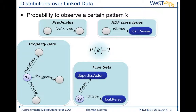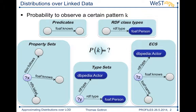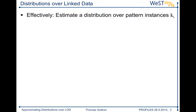The last pattern that I address in this paper — there are many more — is the so-called extended characteristic sets, or ECS for short. These ECS are a combination of properties and RDF class types and the combination in which they are used to model entities on the linked data cloud. When looking at these probabilities, I am effectively estimating a distribution over these patterns on the linked data cloud.